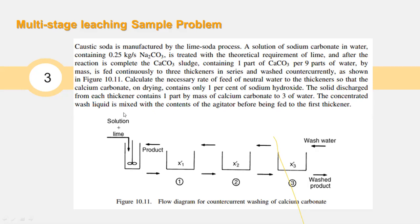The concentrated wash liquid is mixed with the contents of the agitator before being fed to the first thickener. So this is the first thickener, this is the second, and this is the third. We label them thickeners 1, 2, and 3 based on where the solid is being introduced.